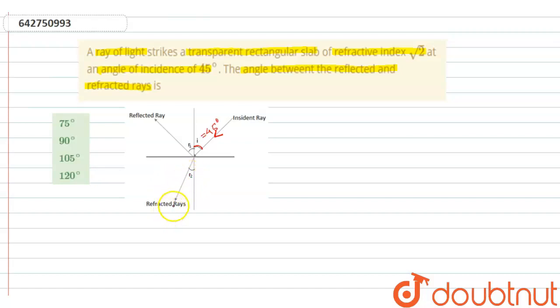Now this is refracted ray, so this will be angle of refraction. Now from question, angle of incidence i is equal to 45 degrees, mu is equal to root 2, that is refractive index.